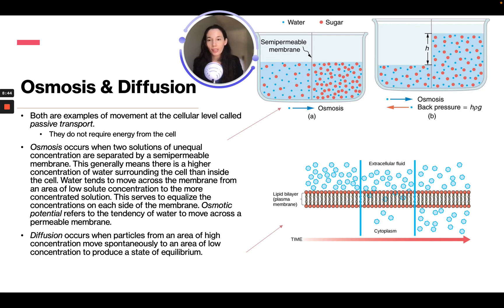Osmosis occurs when two solutions of unequal concentration are separated by a semi-permeable membrane, meaning certain things can pass through and others cannot. There is generally a higher concentration of water surrounding the cell than inside. Water tends to move across the membrane from an area of low solute concentration to a more concentrated solution, serving to equalize the concentrations on each side.